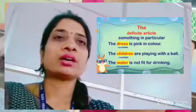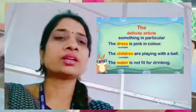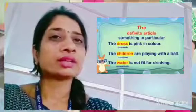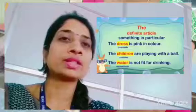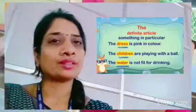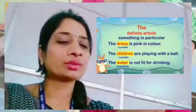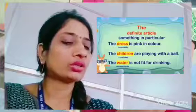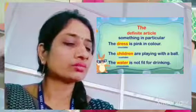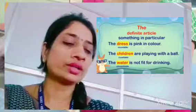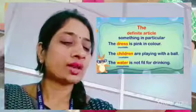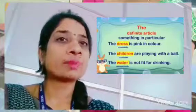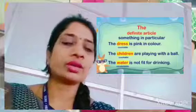Now let's learn about 'the.' 'The' is a definite article. It tells us about something in particular — it talks about a specific thing. For example: 'The dress is pink in color,' 'The children are playing with a ball,' 'The water is not fit for drinking.' In these examples, 'the dress,' 'the children,' 'the water' all refer to something specific and particular.